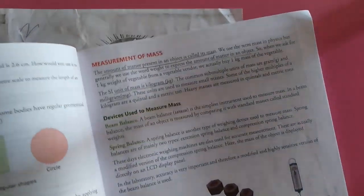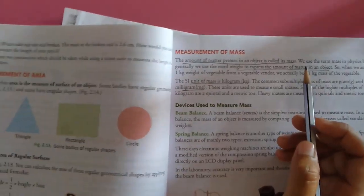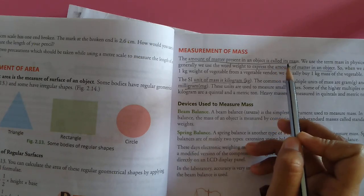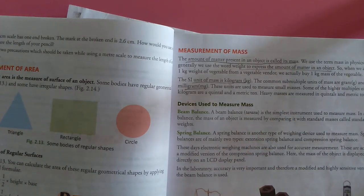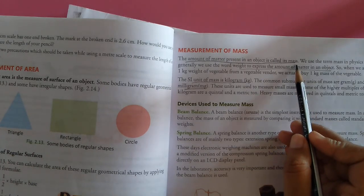There are some checkpoints related to these formulas. Try to do this by yourself. Next, measurement of mass. The amount of matter present in an object is called its mass.